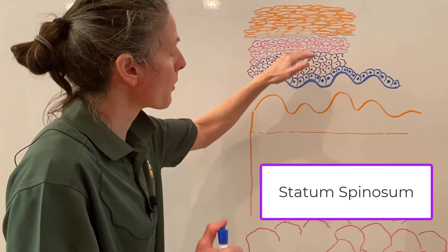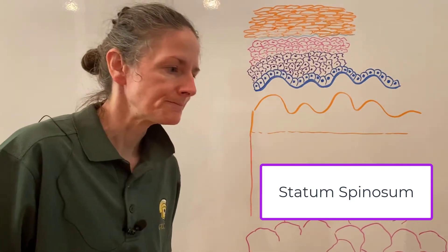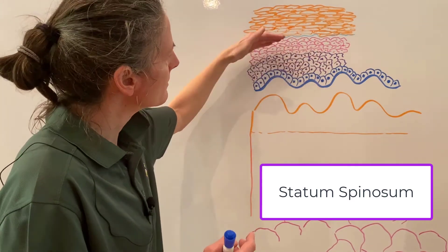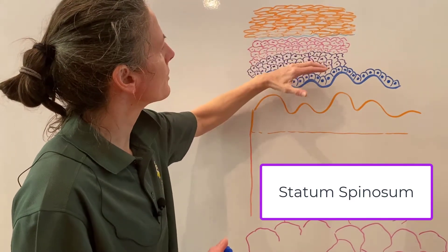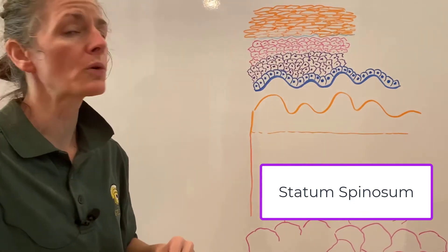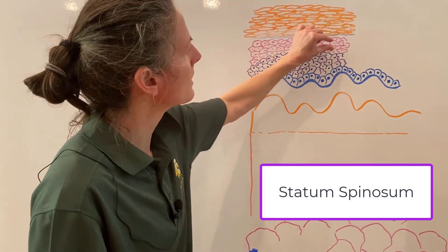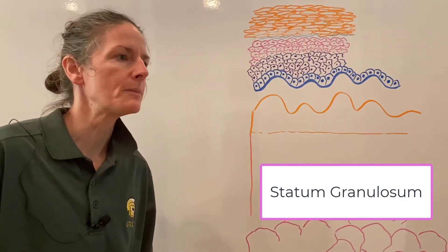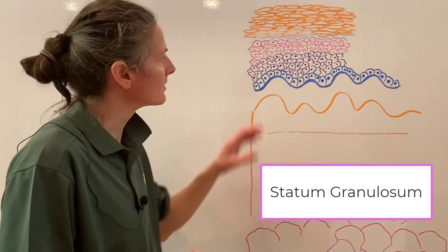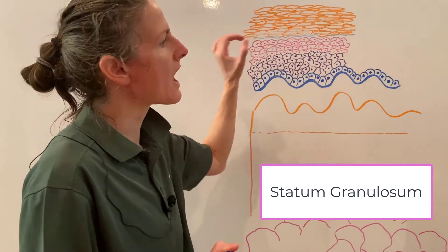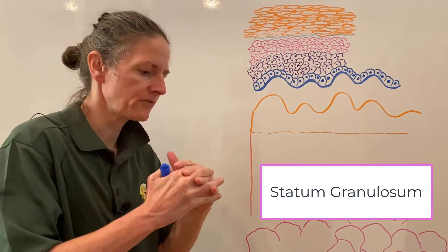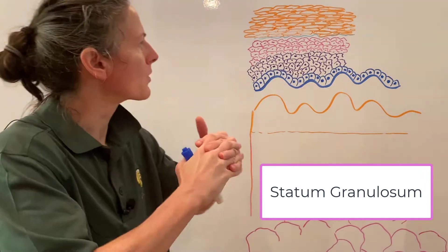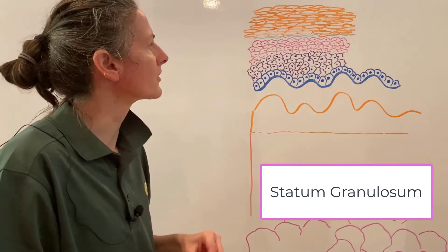In the stratum spinosum, cells start making keratin — fibrous proteins that begin to cross-link. As cells are pushed further up, they get flatter and lose more cytoplasm, becoming the stratum granulosum, so called because of its granular appearance. At this point, they're producing a lot of keratin, cross-linking these proteins into a fibrous network that gives strength to the cells.